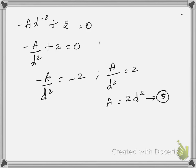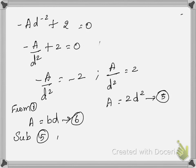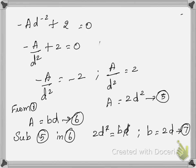From equation 1 we know A equals B times D, restated as equation 6. Substituting equation 5 into equation 6: 2D² equals B times D. One D cancels from both sides, giving B equals 2D. This is equation 7.